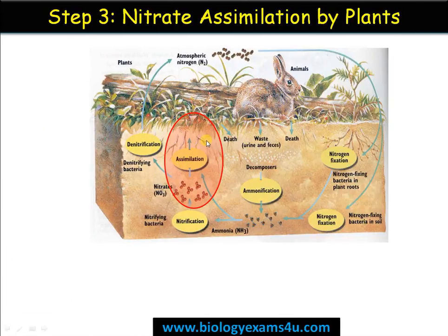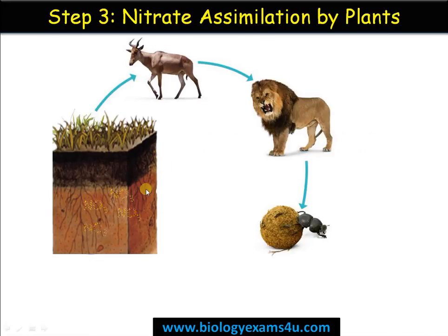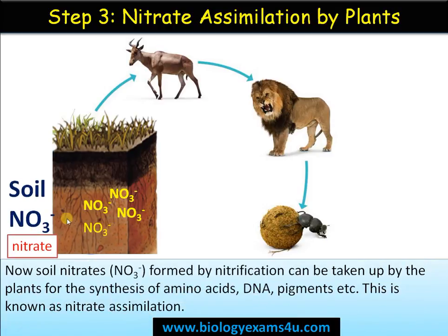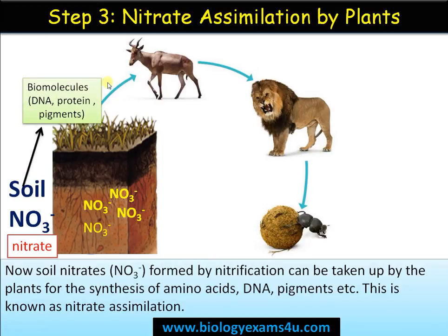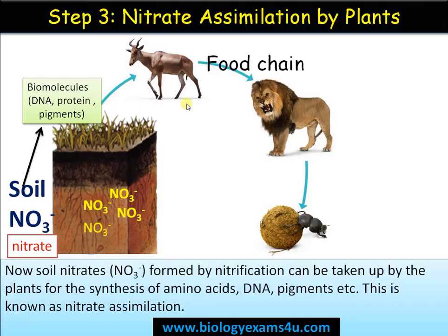The third step is nitrate assimilation by plants. Now we have soil nitrates produced by nitrification. This soil nitrate is taken up by the plant and converted into biomolecules — incorporated into DNA, proteins, pigments, etc. These enter the food chain, eaten by herbivores and carnivores, passing through living organisms. This process is called nitrate assimilation: soil nitrate converted to biomolecules by plants and passed on to other organisms in the food chain.